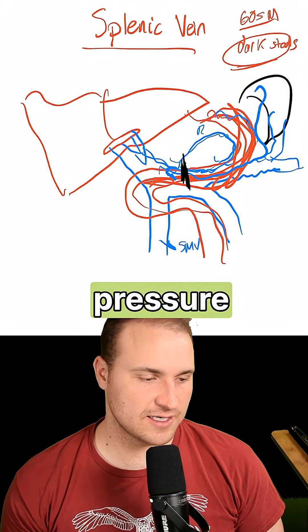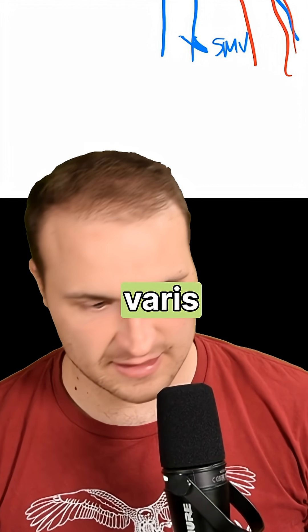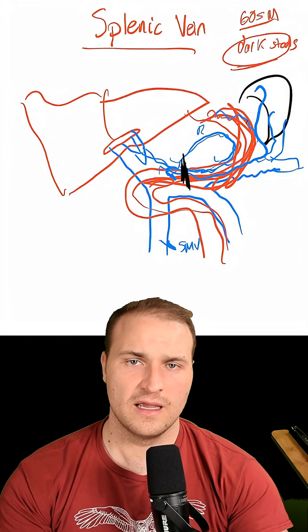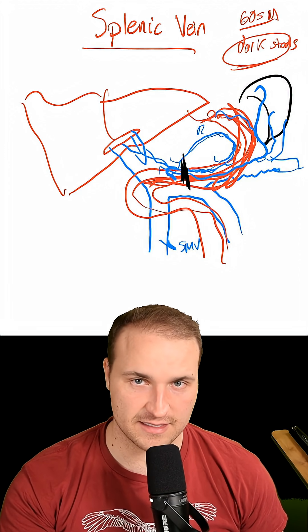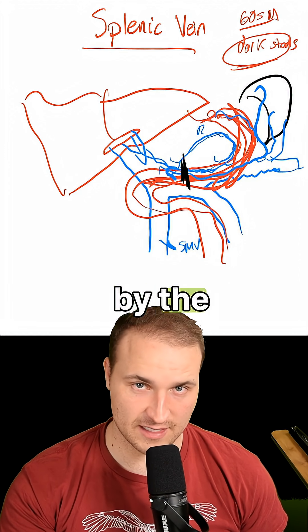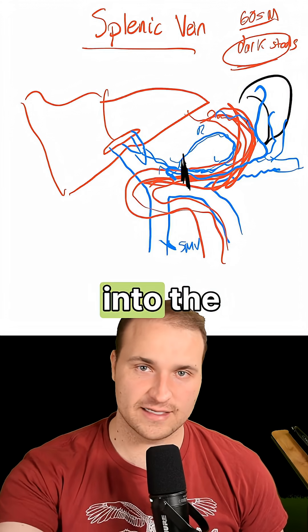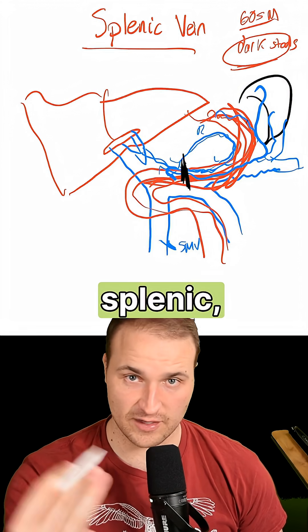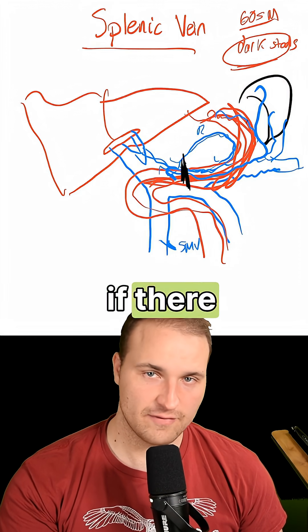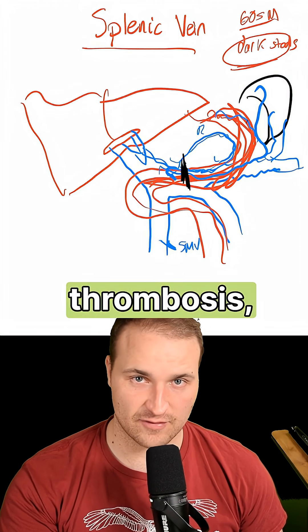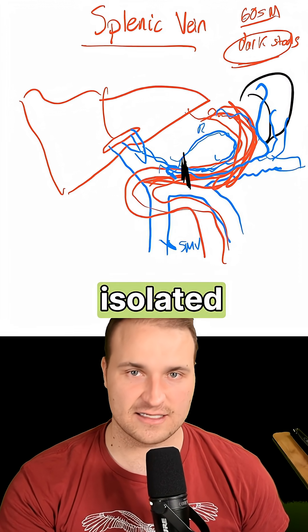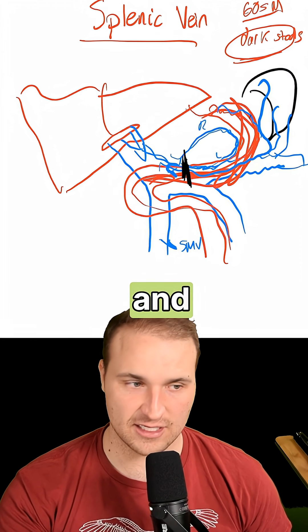That clot increases pressure and leads to gastric varices only in the fundus. The fundus of the stomach is drained by the short gastric veins, and these drain into the splenic vein, not the portal vein directly. So if there is a splenic vein thrombosis, pressure backs up in the short gastric veins, causing isolated dilation and fundal varices.